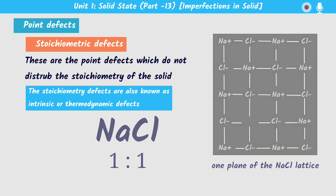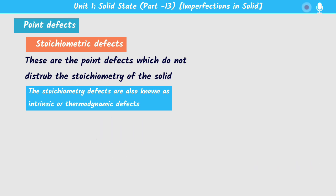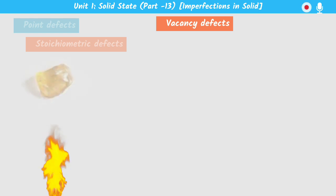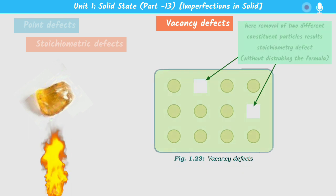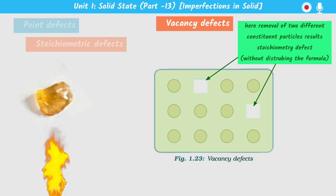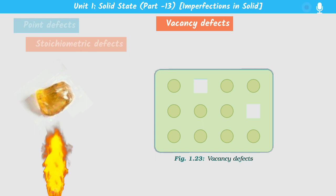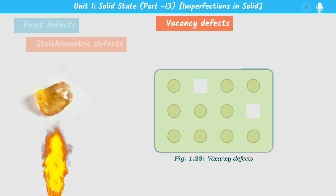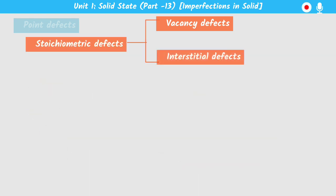Stoichiometric defects are divided into two types: vacancy defects and interstitial defects. In vacancy defects, when heat is applied to a crystal, some constituent particles may come out, creating vacancies and thus defects. Since constituent particles are lost from the crystal, the total density of the solid will decrease.